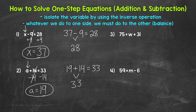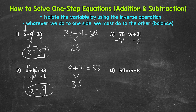Moving on to number 3, we have 75 equals W plus 31. Now for number 3, the variable is on the right side of the equation — so a little bit of a different look here, but we use the same exact process. So we have what plus 31 equals 75. We are adding 31 here, so the inverse operation — the opposite of addition — is subtraction. So let's subtract 31 from the right side of the equation. Whatever we do to one side, we must do to the other. So subtract 31 from the left side as well. On the right side of the equation, we are adding 31 and subtracting 31, so these 31s cancel each other out. W is now isolated.